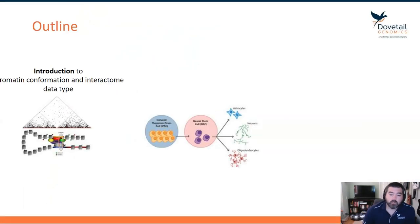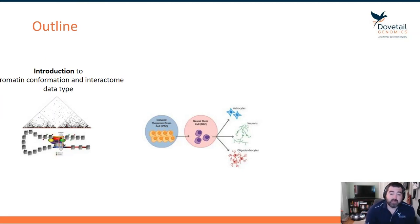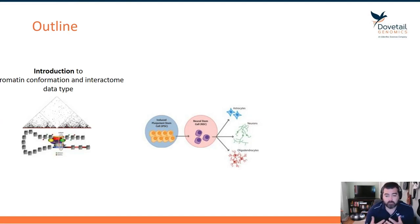A brief outline of what we're going to be talking about today: we'll do a brief introduction into chromatin conformation and the interactome data type, then we'll dive into a case study where we look at cellular differentiation from an iPSC, an induced pluripotent stem cell.